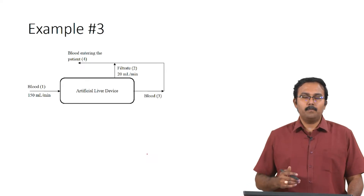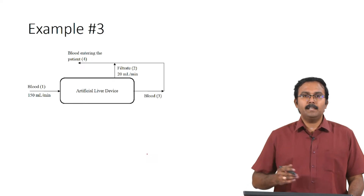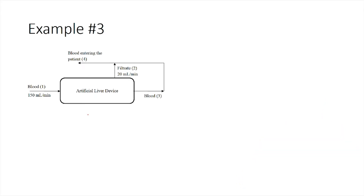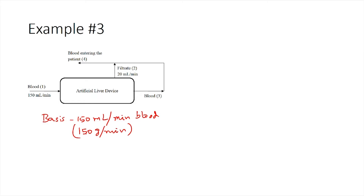For this problem, the chemical reaction is not explicitly given; however, we can use the data given for generation and consumption to calculate material balances. Just like any material balance problem, we first identify the basis. The basis would be 150 ml per minute of blood entering the system, which equals 150 grams per minute of blood, since the density of blood is 1 gram per ml.